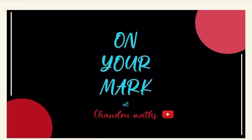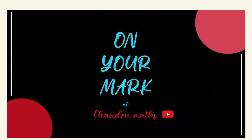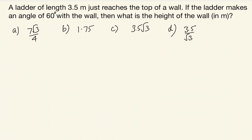Hello everyone, welcome to Chandru Max and welcome to the On Your Mark series. Today we're looking at a trigonometry-related topic. A ladder of length 3.5 meters just reaches the top of a wall. If the ladder makes an angle of 60 degrees with the wall, what is the height of the wall? This is from heights and distances, a sub-topic of trigonometry. Most students make an instant mistake on this question, so we need to avoid that.